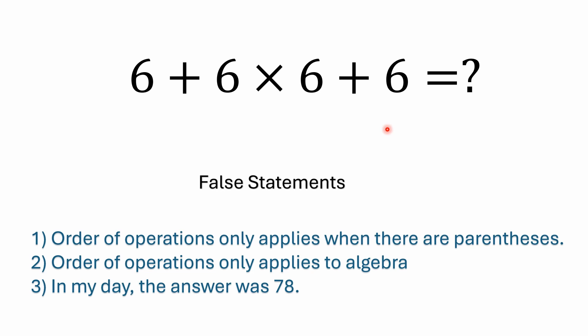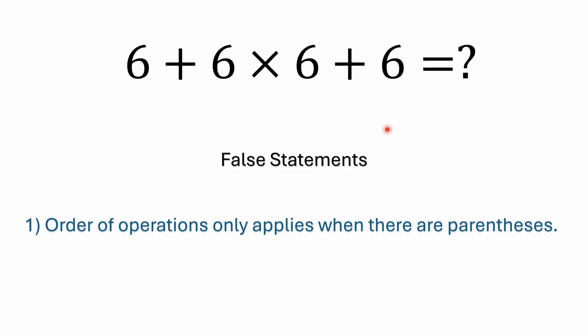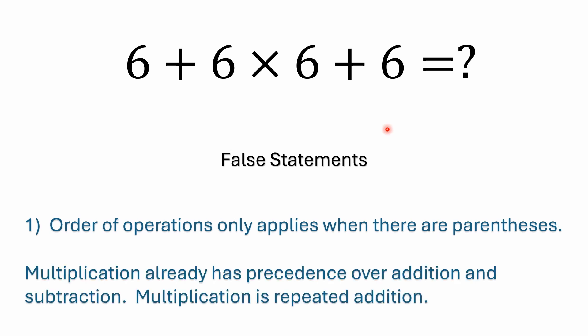Now there are a lot of false statements that people make — here are probably the top three I run into. First: order of operations only applies when there are parentheses. Second: order of operations only applies to algebra. Third: the answer was 78. All three of these are false. On the first one — no, multiplication already has precedence over addition and subtraction. Multiplication is nothing more than repeated addition; you can replace six times six by adding six six times and you'll still get the same answer of 48, but you need to solve the multiplication first.